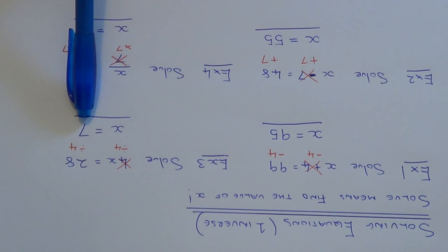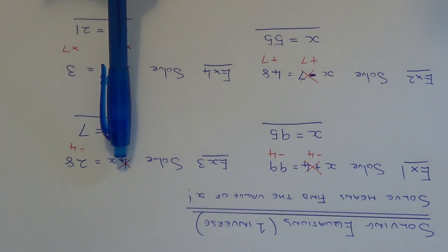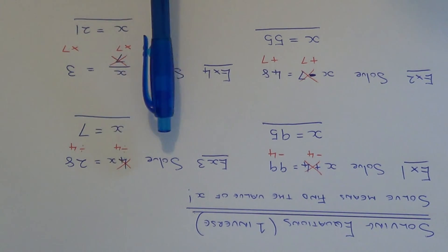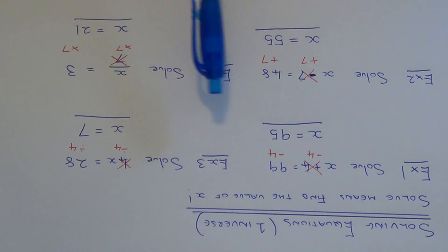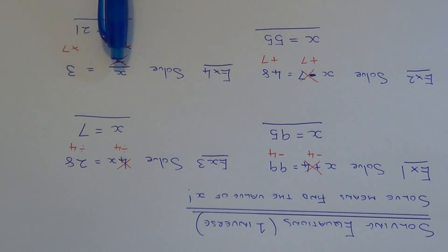Third one we had x equals 7 as our answer. Again sub it in. 4 times 7 is 28. And our final one was x equals 21. So let's check this one. 21 divided by 7 is 3.